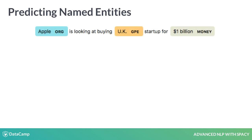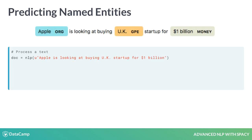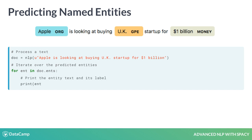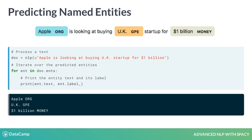Named entities are real-world objects that are assigned a name — for example, a person, an organization, or a country. The doc.ents property lets you access the named entities predicted by the model. It returns an iterator of span objects, so we can print the entity text and the entity label using the label_ attribute. In this case, the model is correctly predicting 'Apple' as an organization, 'UK' as a geopolitical entity, and '$1 billion' as money.